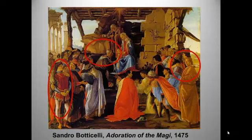Here's Botticelli's take on the same scene. Botticelli was another of our artists who thrived under the patronage of the Medici, in this case Cosimo's grandson Lorenzo the Magnificent. Several of the figures in this painting are identifiable historical personages: the older man kneeling in front of the Virgin is Cosimo de' Medici, the arrogant young man on the left is Lorenzo the Magnificent — Botticelli's main patron — and the figure on the right looking out at the viewer is probably Botticelli himself.